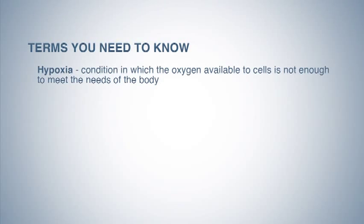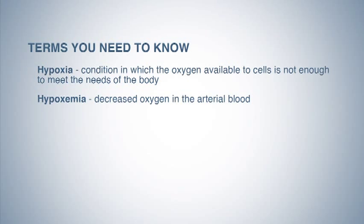There are a few terms you need to know. The first one is hypoxia, which is a condition in which the oxygen available to the cells is not enough to meet the needs of the body. The second one is hypoxemia, which is a decreased oxygen in the arterial blood.